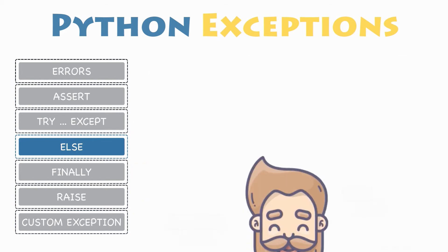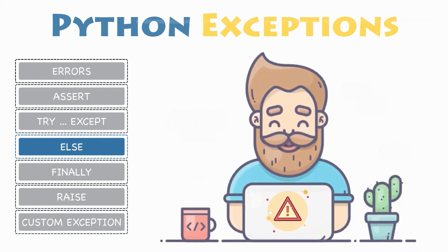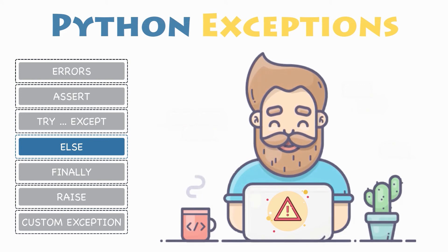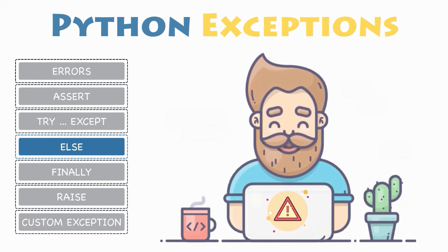You can catch exceptions, handle them properly, and execute some code when no exceptions are raised. But how would you execute a block of code even though an error occurred? Let's find out in the next section.